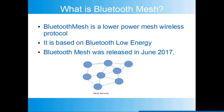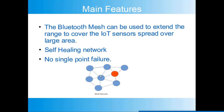This image shows the mesh network — the nodes are interconnected, representing the multipoint-to-multipoint topology. The main features of Bluetooth mesh include: it can extend the range to cover IoT sensors spread over a larger area, it supports a self-healing network, and there is no single point of failure. If a relay node is not functioning, the message will travel an alternate path, making the network reliable.